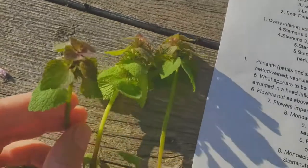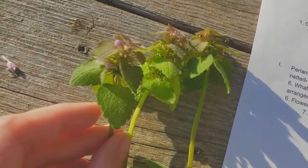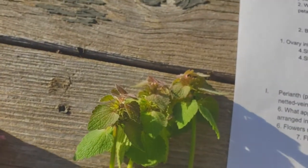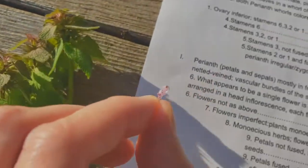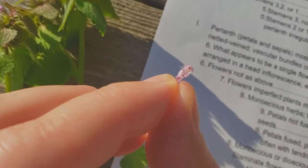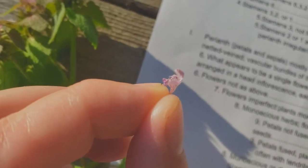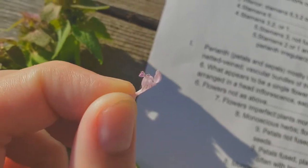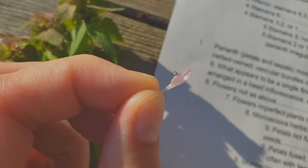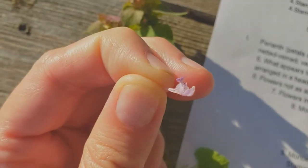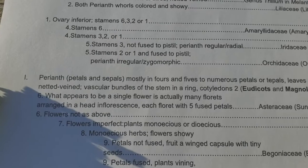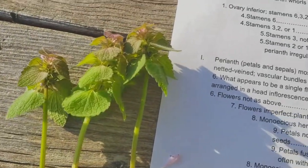What we have here is mostly net-veined. We can look at the leaves — these are very net-veined. We can look at the flowers, and these flowers have fused petals. It looks like there may be four or five petals — maybe three on the bottom and two on the top. It's hard to tell because they are fused. But we'll say this is probably a dicot because of the netted leaf venation.